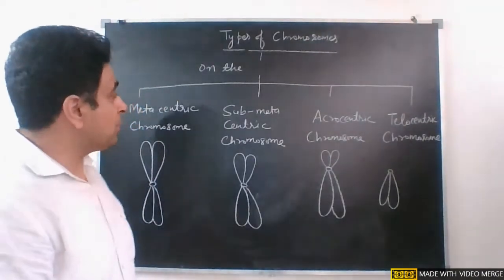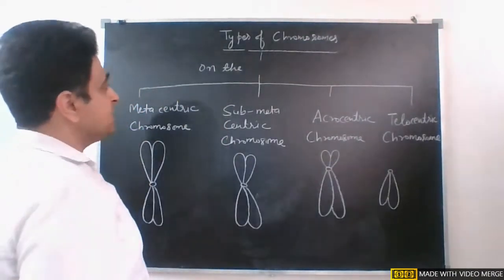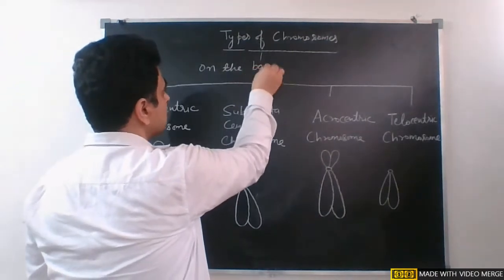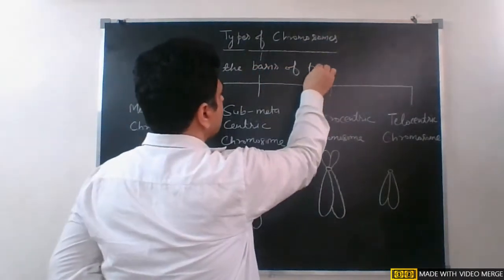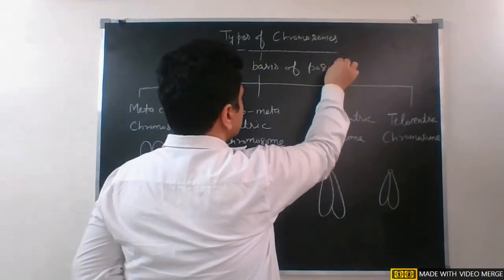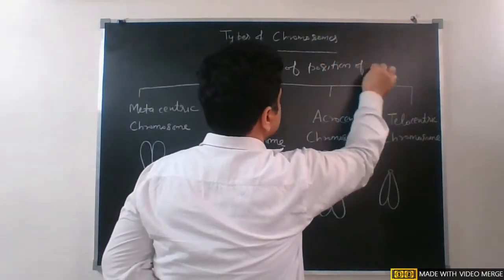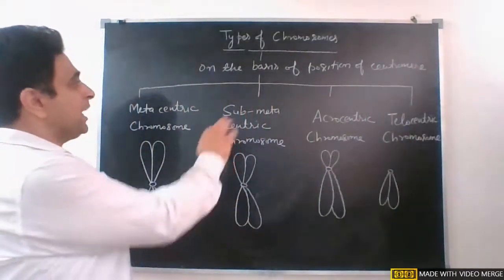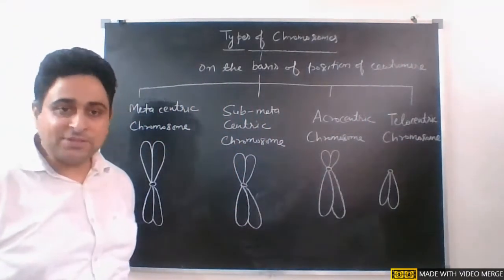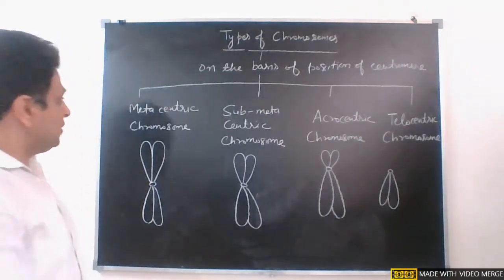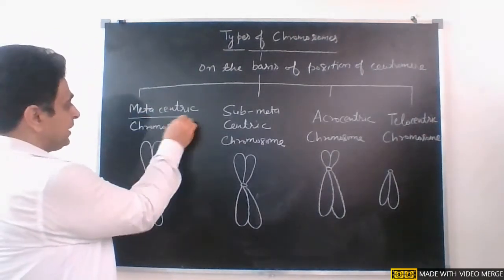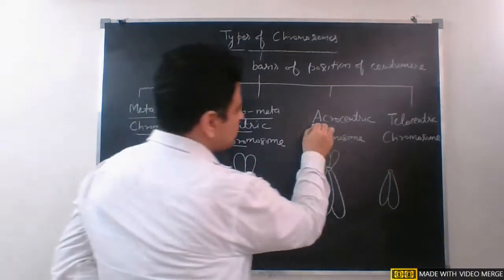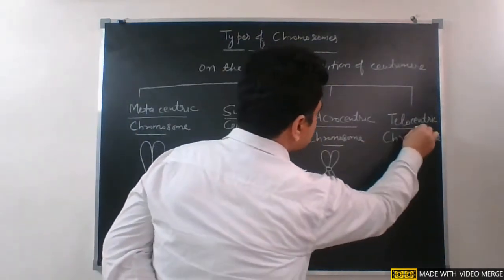On the basis of the position of the centromere, there are four types of chromosomes: first, metacentric chromosomes; second, sub-metacentric chromosomes; third, acrocentric chromosomes; and fourth, telocentric chromosomes.